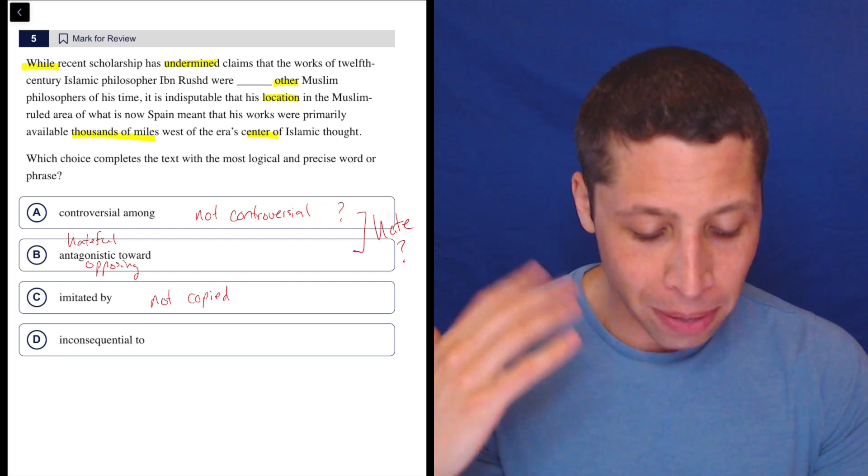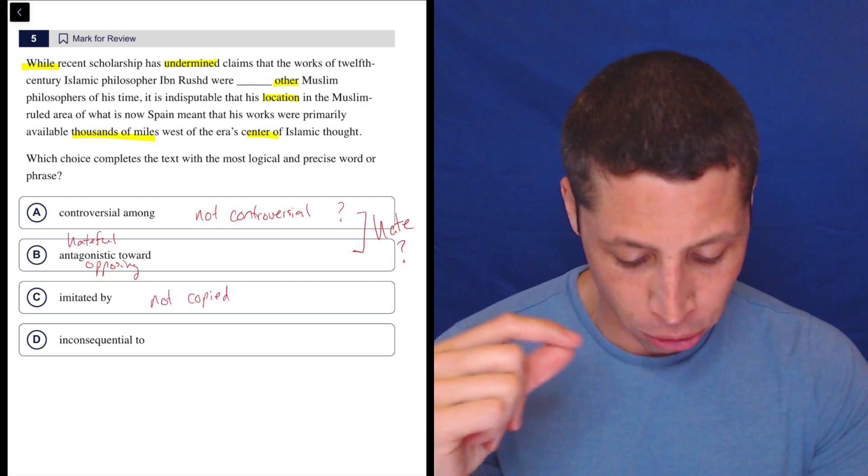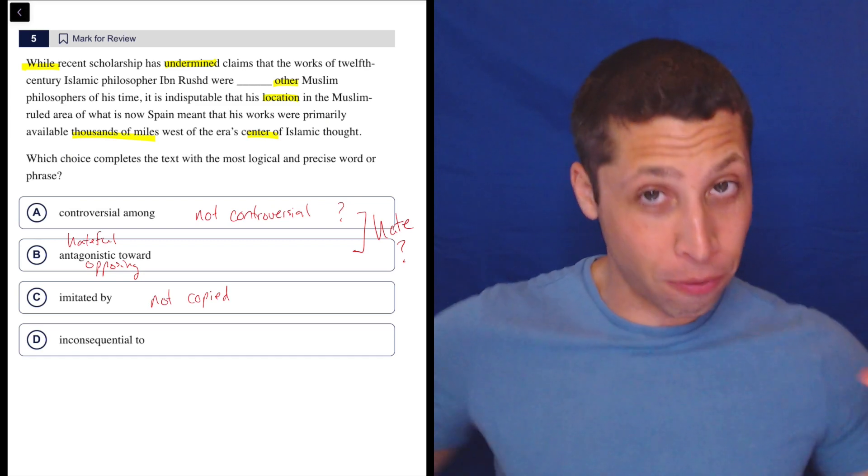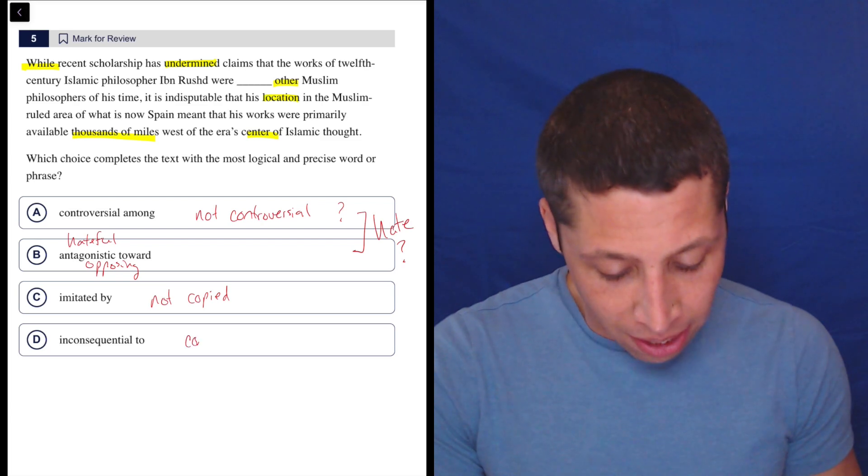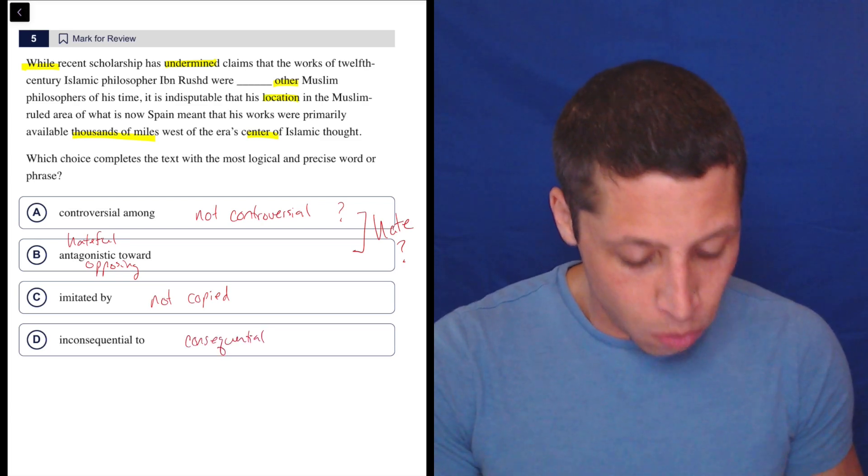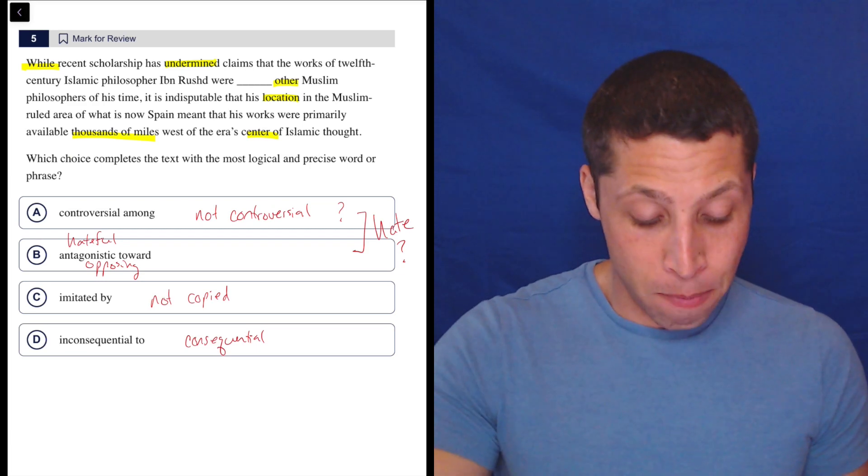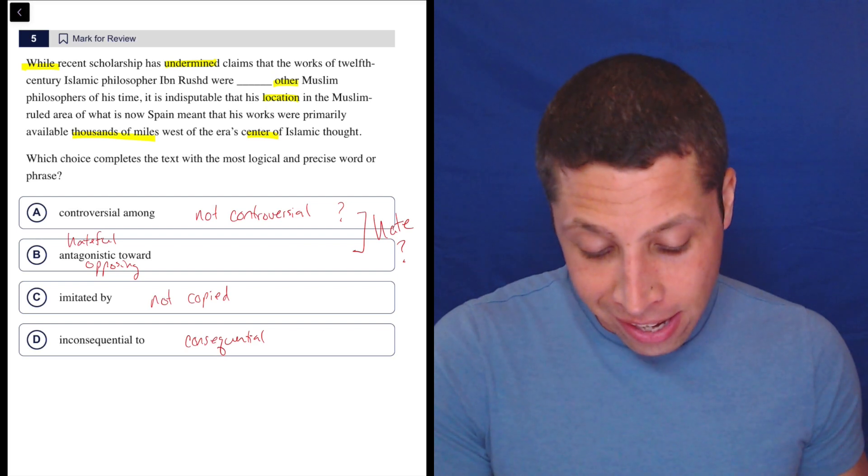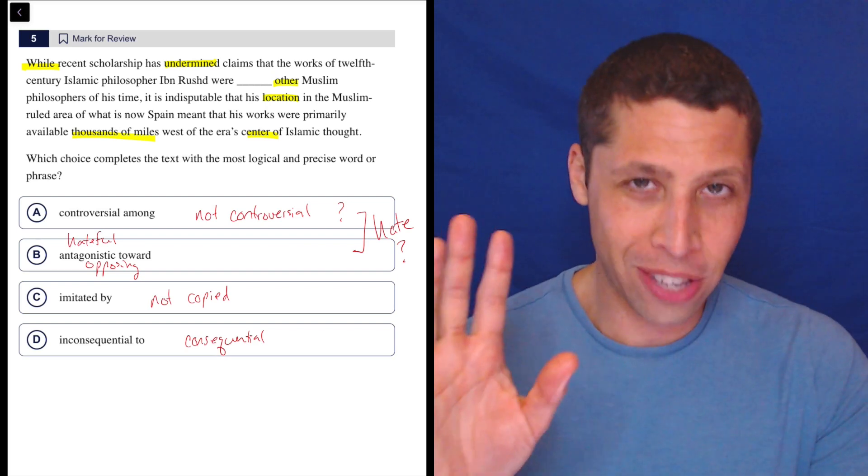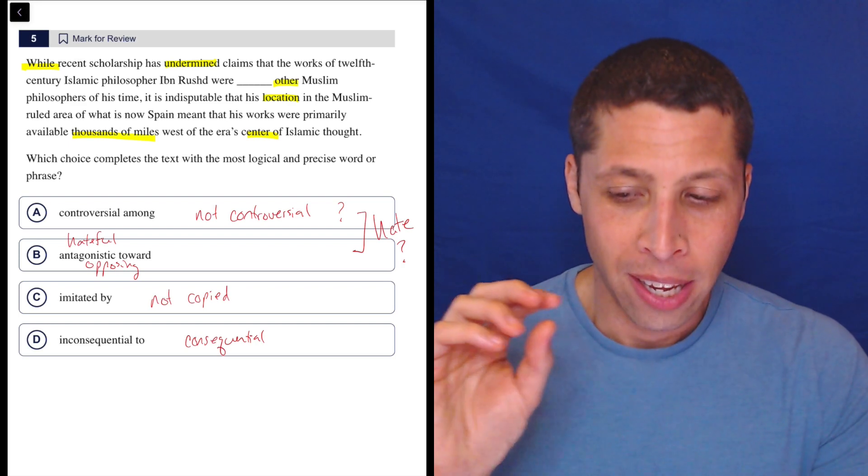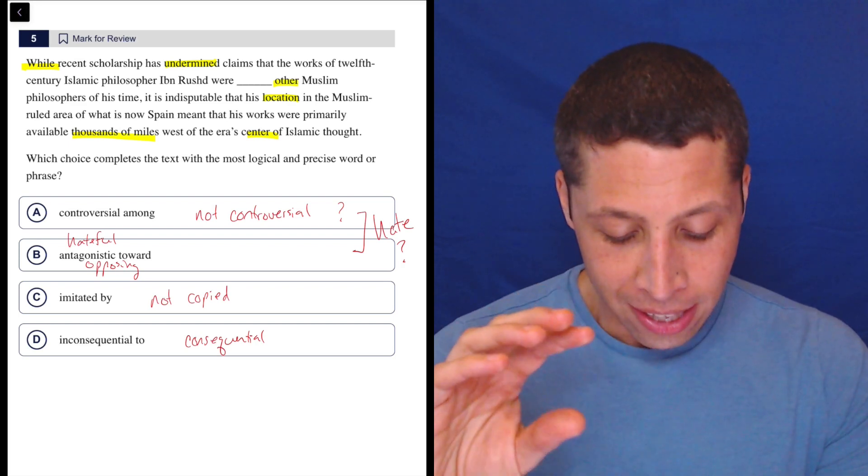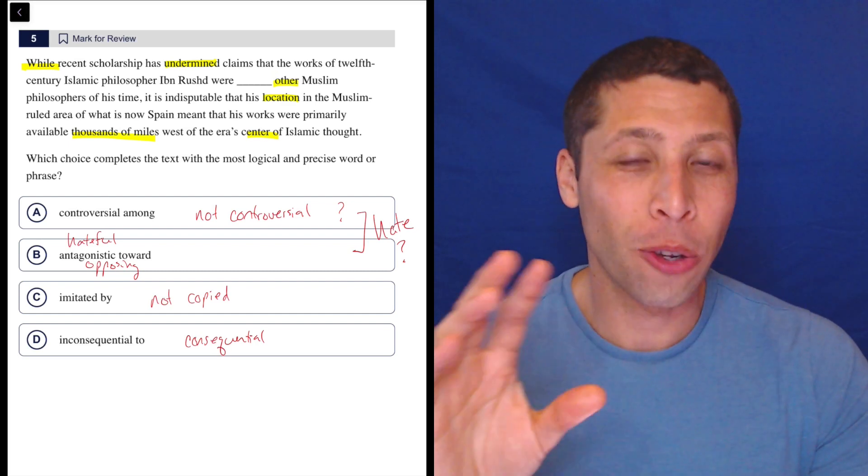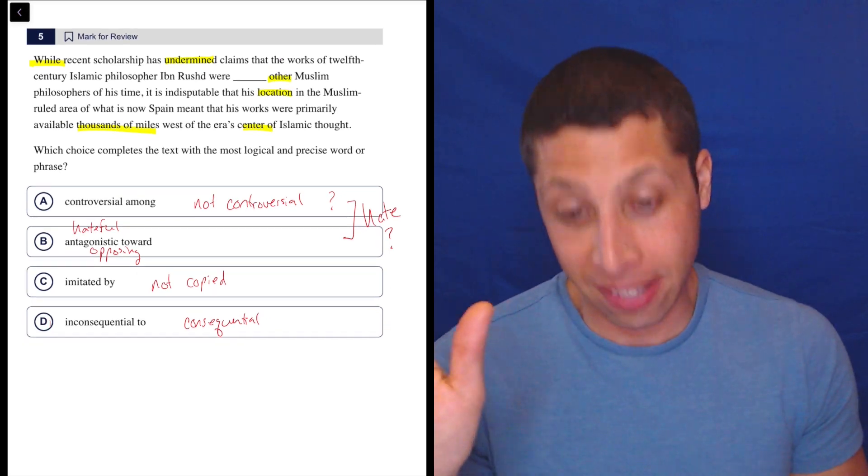While recent scholarship has undermined claims that the works of 12th century Islam philosopher Ibn Rushd were inconsequential to other Muslim philosophers of his time. So the first bit here would be like, it is consequential. So Ibn Rushd matters, but it's indisputable that he is not located near them. So what they're saying is, and this is now I kind of get it - so it's saying that he did matter, but he was far away. So what they previously thought - so basically D is the answer here.